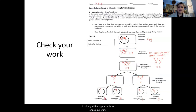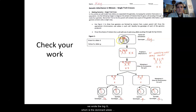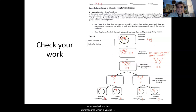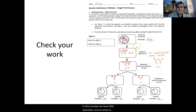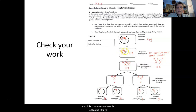Looking at the opportunity to check our work, you can see that as instructed, we wrote the big G — the dominant allele for green fur — on this chromosome, and then the lowercase g, the allele for the recessive trait, on this chromosome, which gives us a heterozygous genotype of big G, little g. In this process, DNA replication occurs, which is why we draw this little X pattern. We have replicated the big G and big G, and this chromosome here is replicated little g, little g. We've also brought our small chromosomes down because they are part of the process, even though we're not tracking any genes on them.